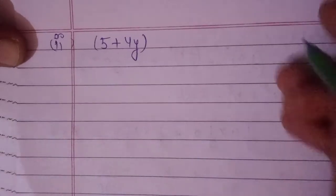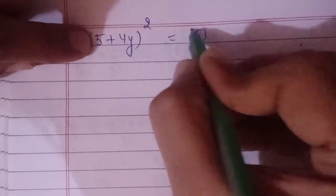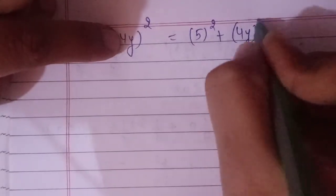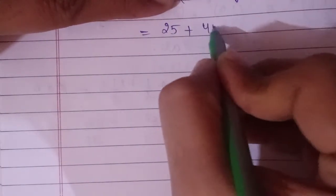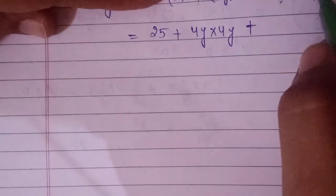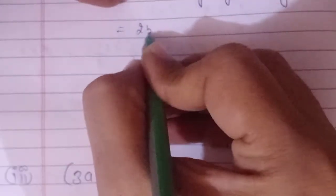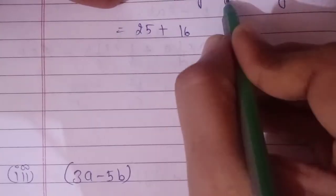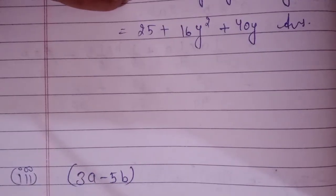Now let's do the second part: find the square of (5 + 4y). We will use the same property. So it's the first term squared, then second term squared, then twice the product of the first and second terms. 5² = 25, 4y² means 4y×4y = 16y². Then 2×5×4y = 40y. So the answer is 25 + 16y² + 40y.